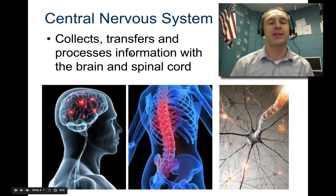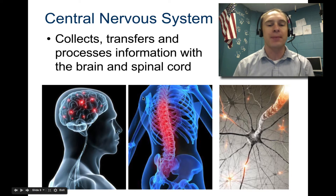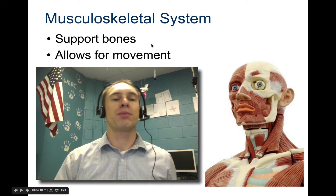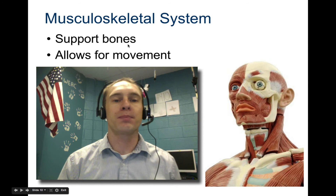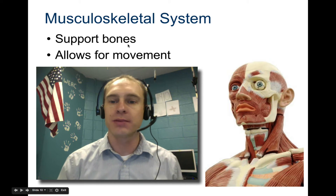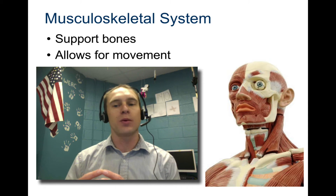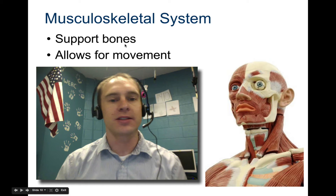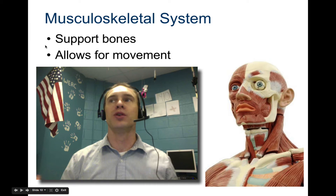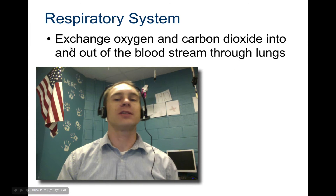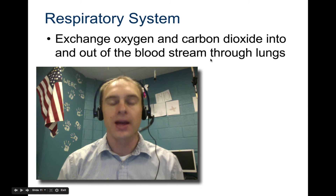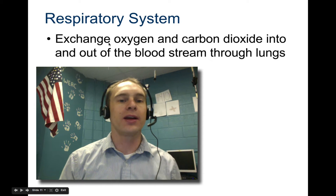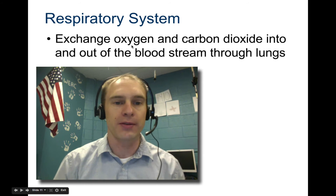The musculoskeletal system supports bones and allows for movement. It provides your general framework and shape, which needs to be accounted for when designing — especially spacecraft, where space within the pod is at such a premium. You need to cram people in but also allow them to move and stretch. The respiratory system exchanges oxygen and carbon dioxide into and out of the bloodstream through the lungs. If you don't account for this at high altitudes, you don't have oxygen, so it has to be designed into the aircraft as some sort of respirator for extra oxygen.